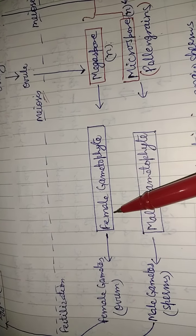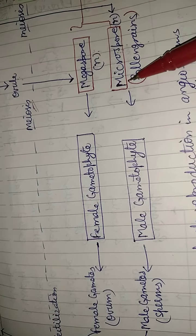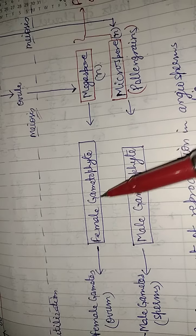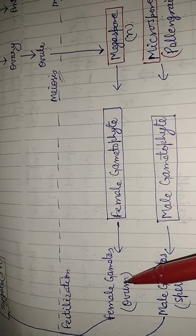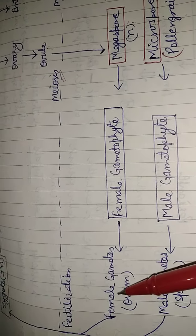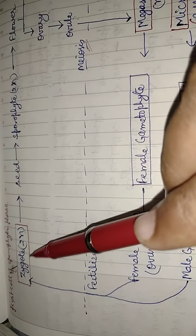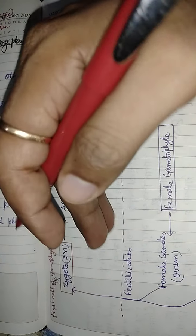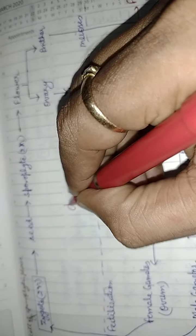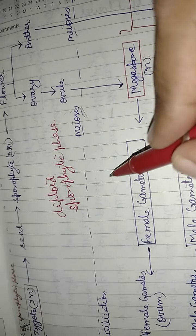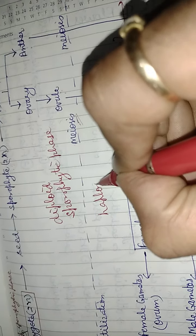Megaspore forms the female gametophyte, and microspore or pollen grains form the male gametophyte. Female and male gametophytes respectively form female gametes like ovum and male gametes like sperms. Both male and female gametes fuse and fertilize to form a diploid zygote. After fertilization, the diploid phase occurs. This upper part is the diploid sporophytic phase, and the lower part is the haploid gametophytic phase.